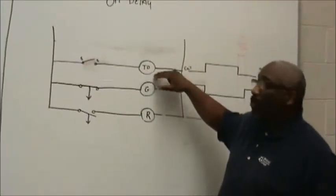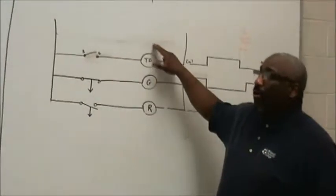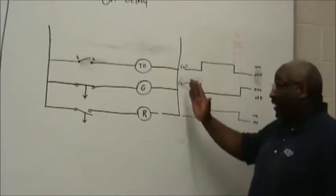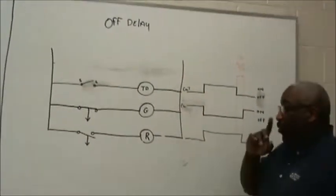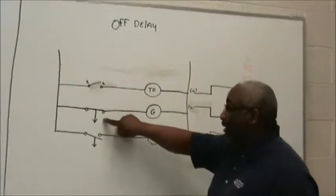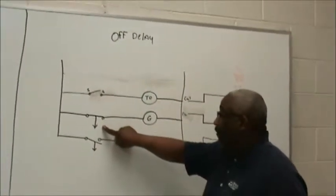The timer coil will not say off-delay or on-delay on it. Maybe you would find it in a spec sheet, but not in the ladder diagram. The way you tell what type of timer you're working with is by looking at the timer symbol.